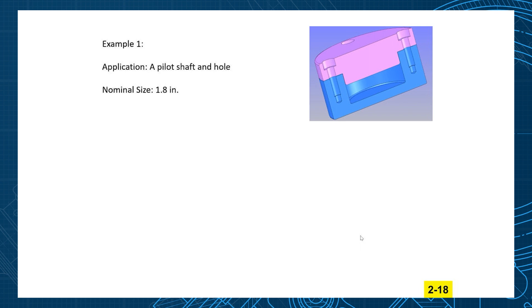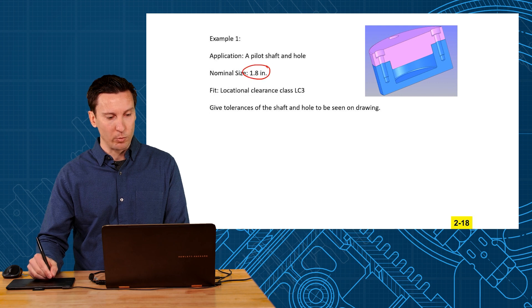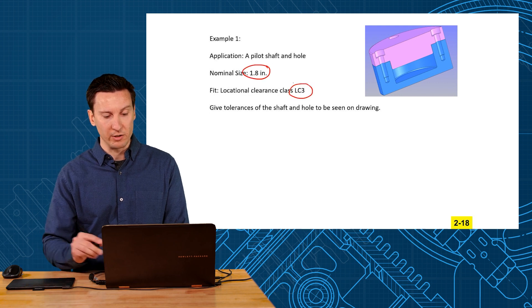Locational clearance, probably interference fit or force fit or running and sliding fit. I think we'd want a locational clearance for this. Then we would select LC3 and say locational clearance is what we want. So we have two items then: nominal size 1.8 and the LC3 fit that we want.